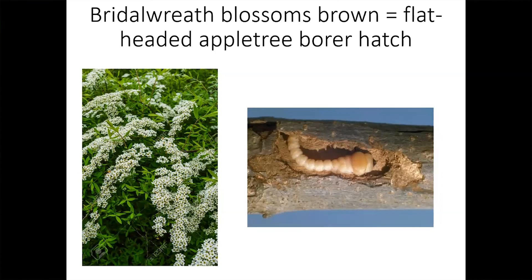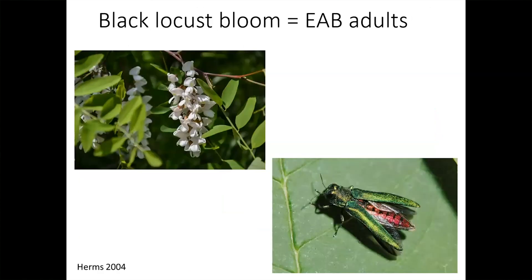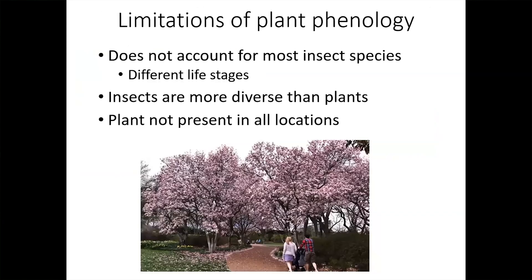One of the newer correlations we've found is that the invasive emerald ash borer adult flight is highly correlated with when black locusts bloom, and some forestry people actually use this for managing when they apply Bt to control insects.